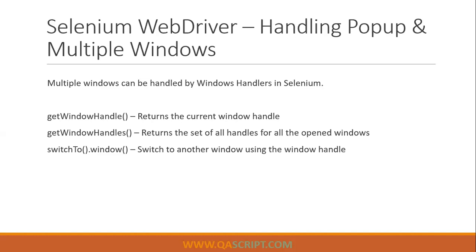There are a couple of methods which are pretty useful in performing these operations. The first is getWindowHandle, which returns the current window handle that is currently opened in the application. Then getWindowHandles returns a set of all the handles which are currently opened in your application - you can call these the child windows. The most important one is switchTo window, where using a window handle we can switch to another window and perform different operations.